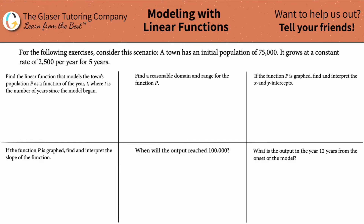It says: for the following exercises, consider this scenario — a town has an initial population of 75,000. It grows at a constant rate of 2,500 per year for five years. Find the linear function that models the town's population p as a function of the year t.